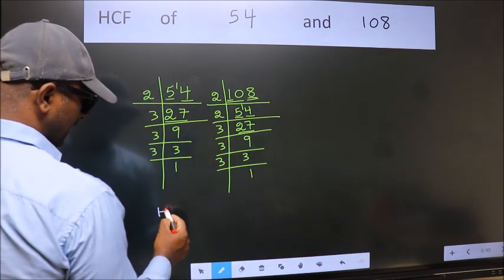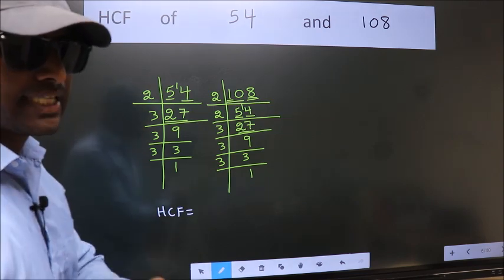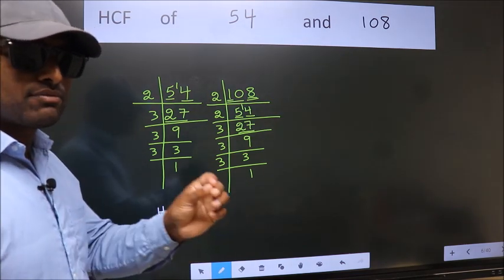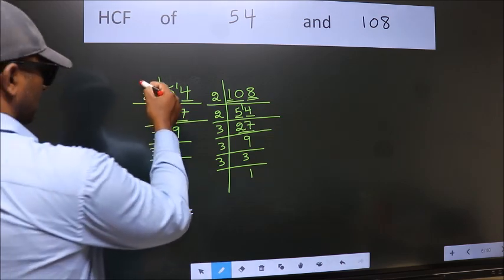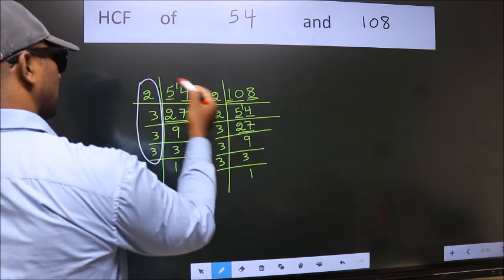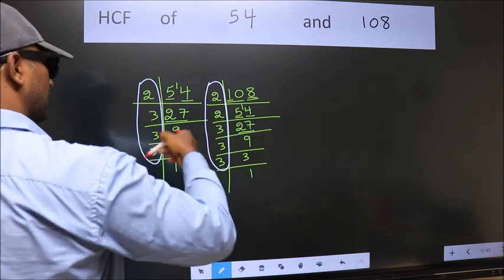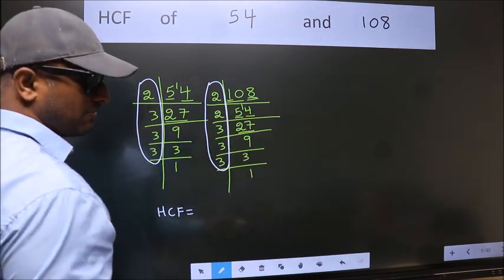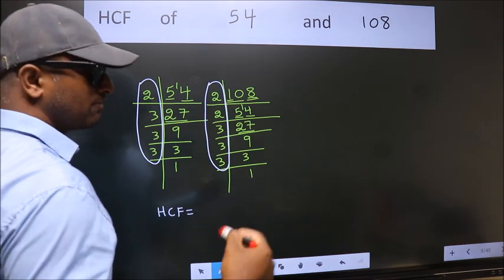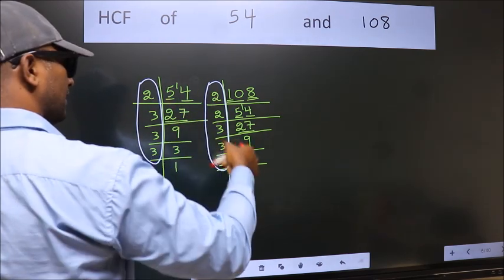Therefore, our HCF is, HCF is the product of the numbers which should be present over here and also here, here and here. So, now let us find the numbers which should be present here and here.